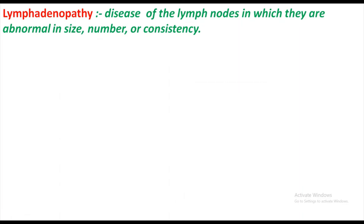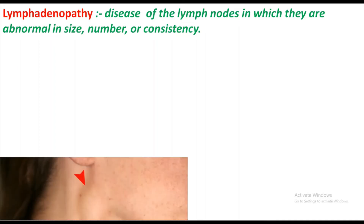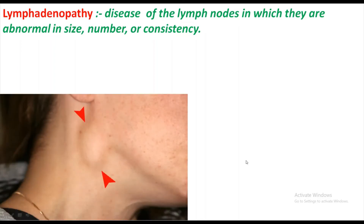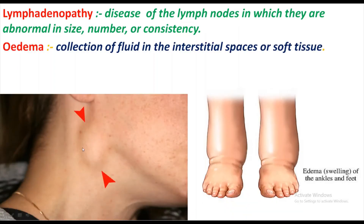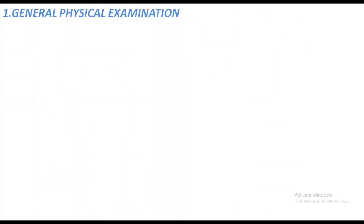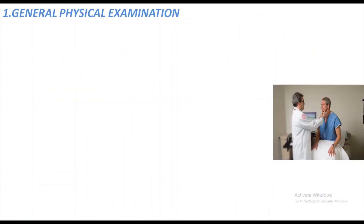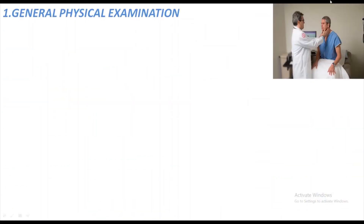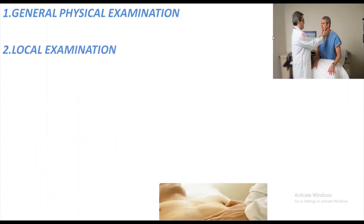Lymphadenopathy is also very important — it is disease of the lymph nodes in which they are abnormal in size, number, and consistency. You can see here a cervical lymph node. You also have to look for edema, which is collection of fluid in interstitial spaces. Now we come to the general physical examination.